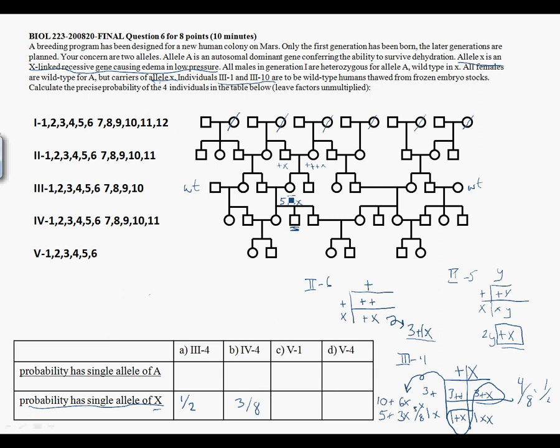Now, notice that he cannot be XX. If the question were probability that he's homozygous recessive for X, that's not possible because he's male. So let's continue with C, individual V1.